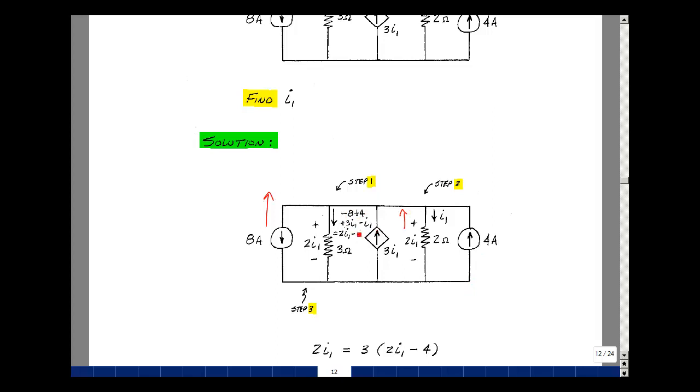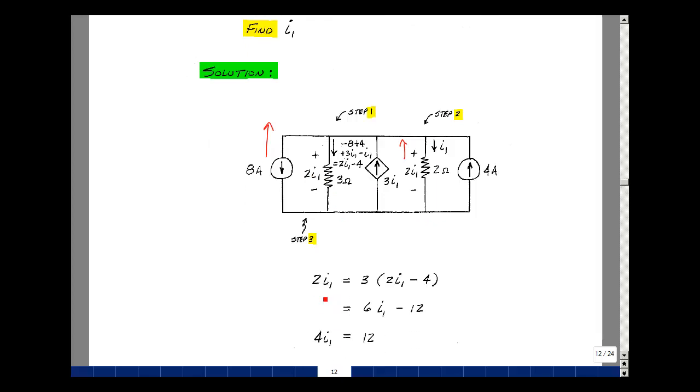I have 2I1 minus 4 is this current. Now the voltage across this resistor is the same as the voltage across this resistor, which is going to be 2 ohms times I1. 2I1 is this voltage, but because we're sharing the same two nodes, that's the same voltage as here. And now I could equate that to the current times the 3 ohms.